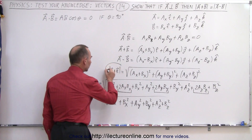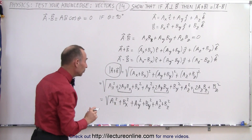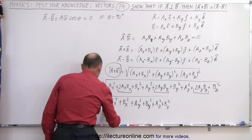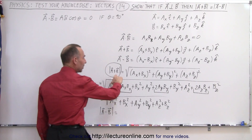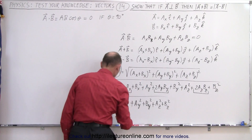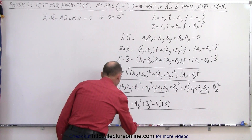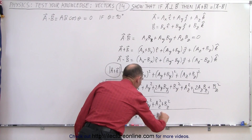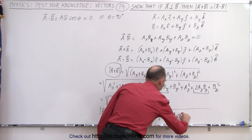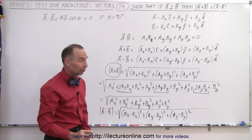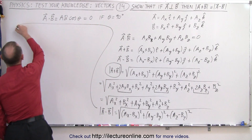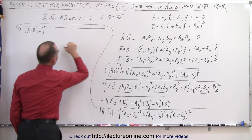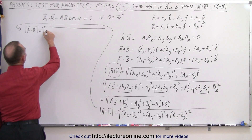Now that we have the magnitude of A plus B, let's calculate the magnitude of A minus B to see if we get the same result — after all, we're trying to show they are equal. The magnitude of A minus B equals the square root of (A_X − B_X)² + (A_Y − B_Y)² + (A_Z − B_Z)². Expanding, we get A_X² − 2A_X B_X + B_X².